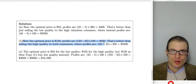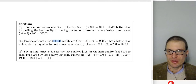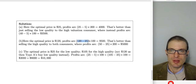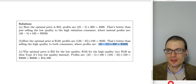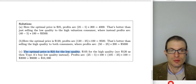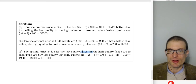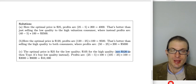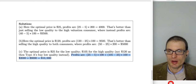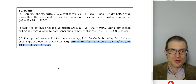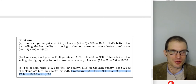When offering both versions: set the low quality price at $25 so type B consumers buy. For high quality, we can't set $120 because type A consumers would get zero consumer surplus from high quality but could get $15 surplus buying low quality instead. So the highest feasible price for high quality is $105. With both versions offered at these prices, total profits are $10,000 — the best option overall.